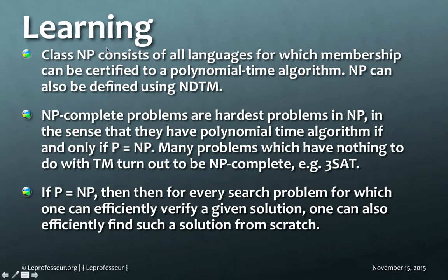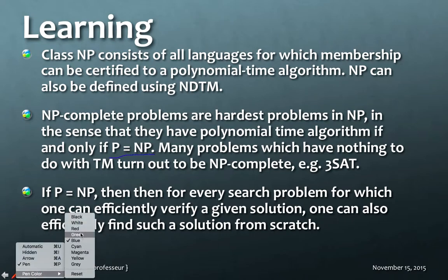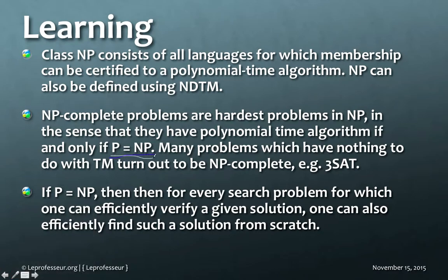Now what we learned today in this lecture is that the class NP consists of all languages for which membership can be certified by a polynomial time algorithm. An NP class can also be defined using non-deterministic Turing machine. Now NP-complete problems are the hardest problems in NP. What it means is that we can solve NP-complete problems if and only if P equals NP, or many other problems which have nothing to do with the Turing machine turn out to be NP-complete, for example, 3-SAT.